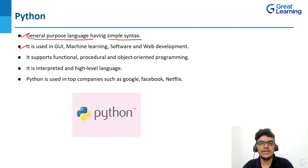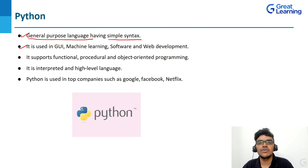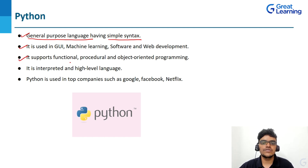We have libraries like PyQt5, Python TK, and Intel. Using these libraries you can create a GUI application. Also, Python provides several frameworks such as Flask and Bottle which you can use for web development. It supports functional, procedural and object-oriented programming.